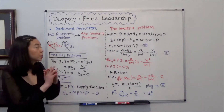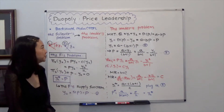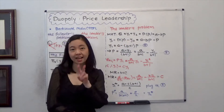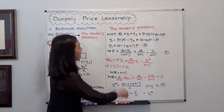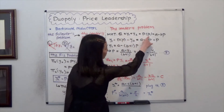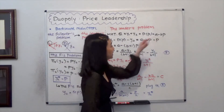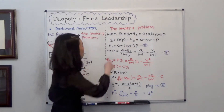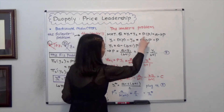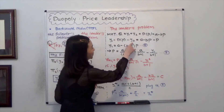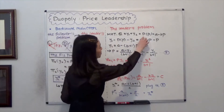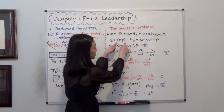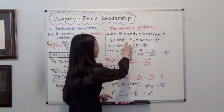Now we move back to solve for the leader, Firm 1's problem. The market quantity is equal to y1 plus y2 since we only have two firms. We are also given that the demand function is D(p) = a minus bp. So y1 is equal to the entire market quantity D(p) minus y2, which is a minus bp minus y2.